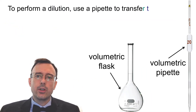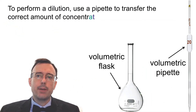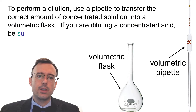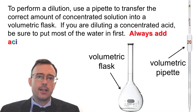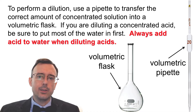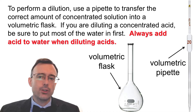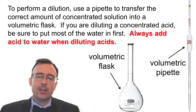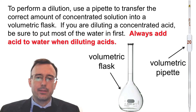To perform a dilution, use a pipette to transfer the correct amount of concentrated solution into a volumetric flask. If you are diluting a concentrated acid, be sure to put most of the water in first. Always add acid to water when diluting acids — otherwise it can actually boil and blow up in your face, which would be a bad thing.